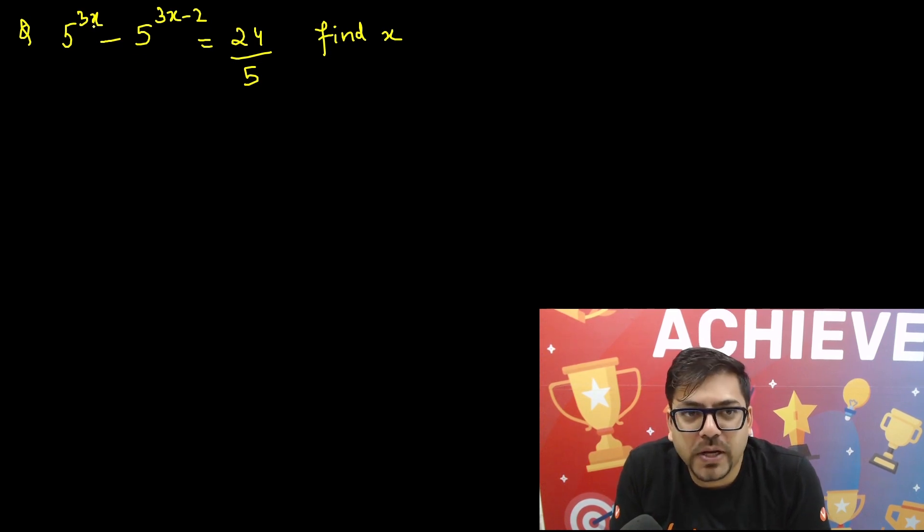The question says that 5 raised to power 3x minus 5 raised to power 3x minus 2 equals 24 by 5, and we have to find the value of x. So let's see how we are going to do this.